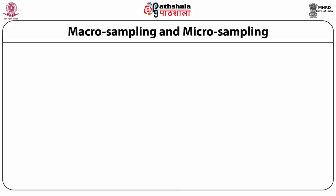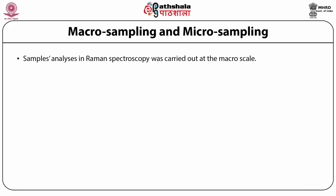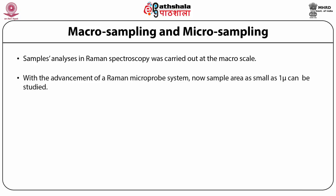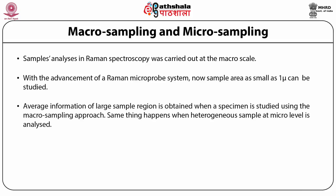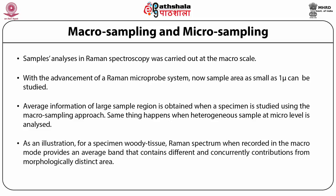Now we come to macro sampling and micro sampling. Sample analysis in Raman spectroscopy was carried out at the macro scale. With the advancement of a Raman microprobe system, now sample areas as small as one micron can be studied. Average information of a large sample region is obtained when a specimen is studied using the macro sampling approach. The same thing happens when a heterogeneous sample at the micro level is analyzed. For a specimen like woody tissue, the Raman spectrum when recorded in the macro mode provides an average band.